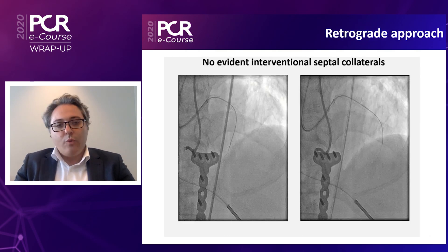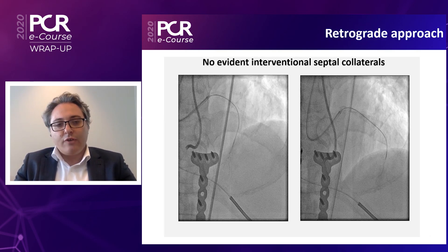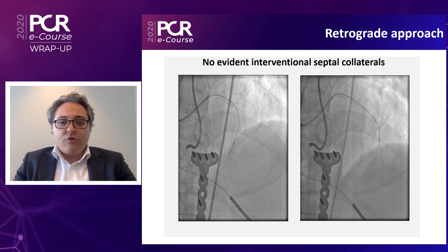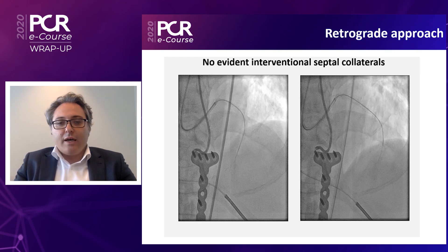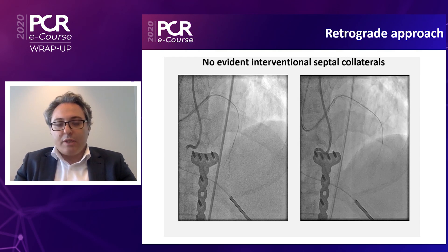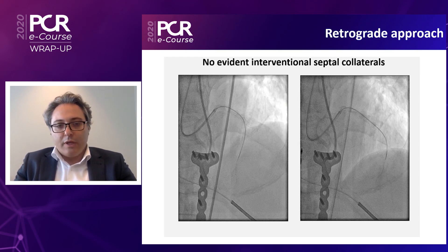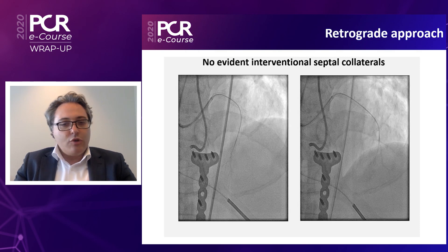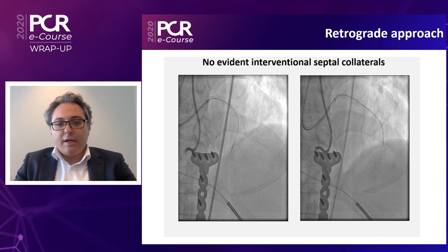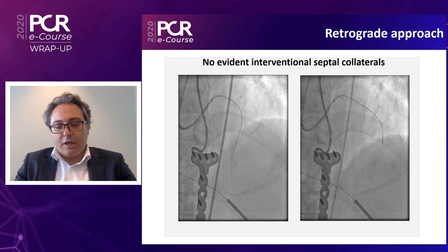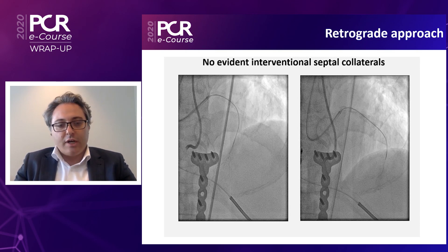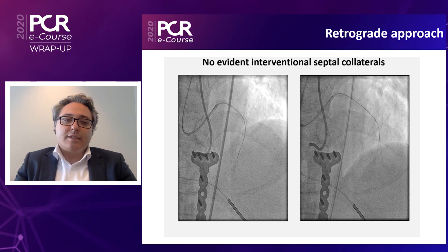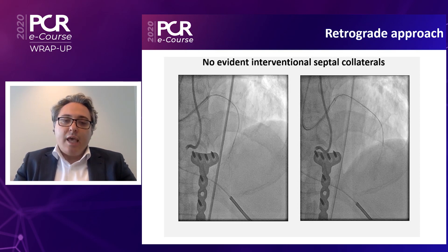We started with a retrograde approach and tried to find a good septal to go from the left system to the distal right coronary artery. But there was no clear septal connection there, so we came back to the right.